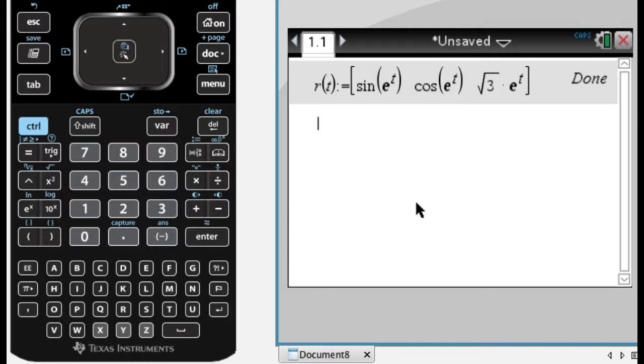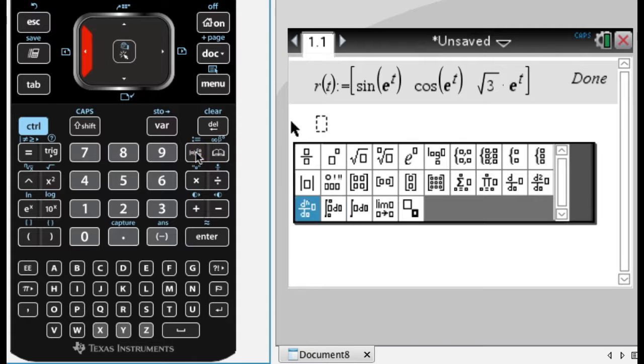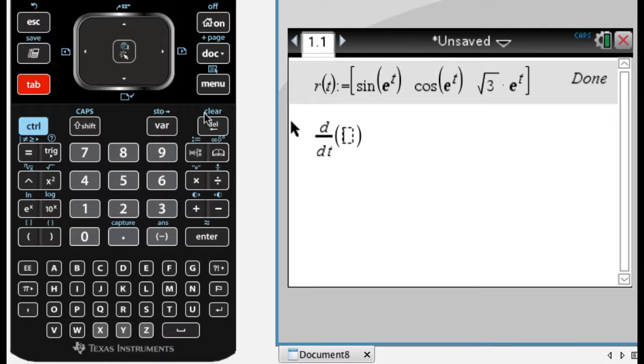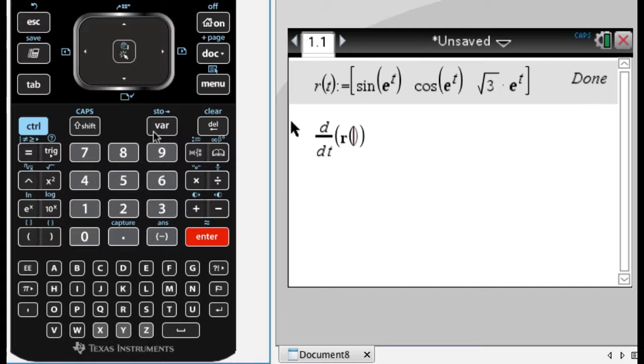Okay, so the process here isn't really that bad. What I want to do first is I want to find the derivative of this. So I will find the derivative using this, so the derivative with respect to t of, and it's r of t, and I get that.